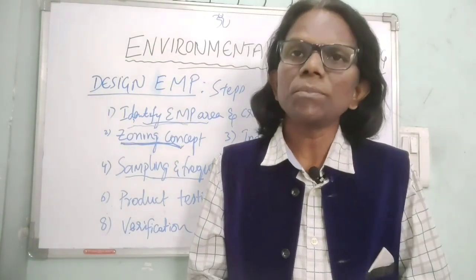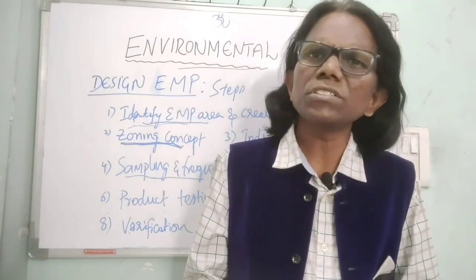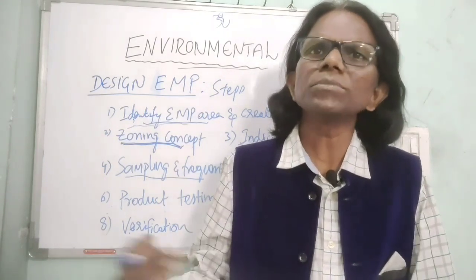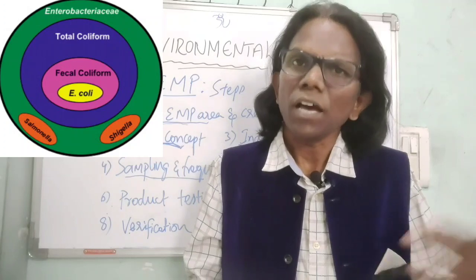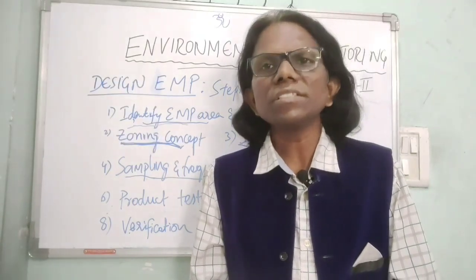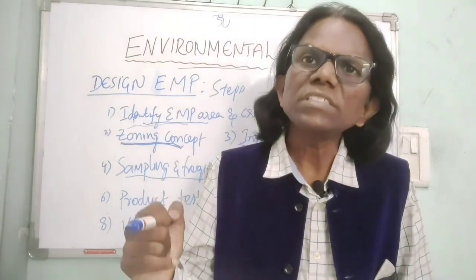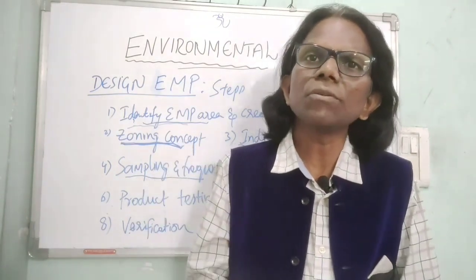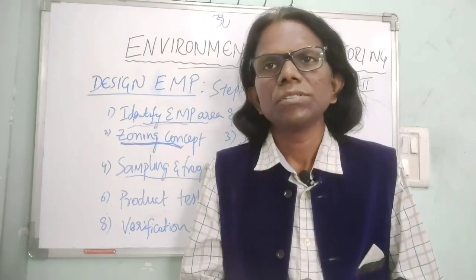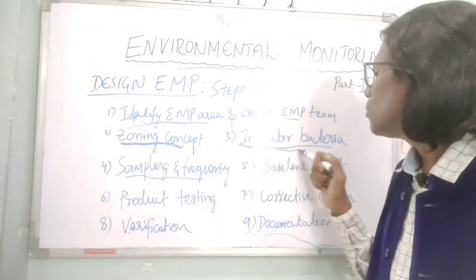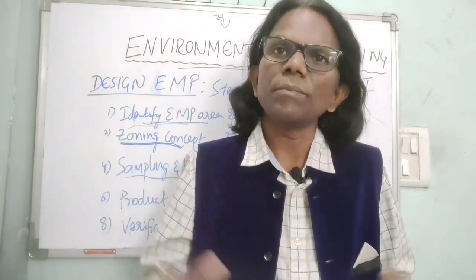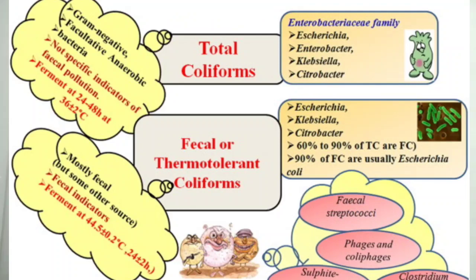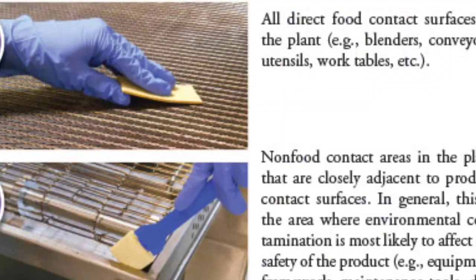In wet processing industries, where Listeria monocytogenes is the concern, indicative parameters such as coliforms or Listeria species are used. If coliforms or any Listeria species are present, they are considered indicative organisms suggesting possible contamination by Listeria monocytogenes. This is why monitoring indicative parameters in food processing environments, especially RTE sections, is essential.